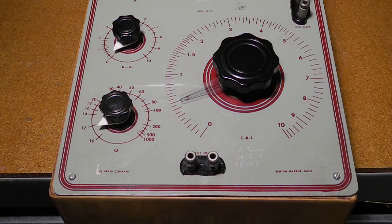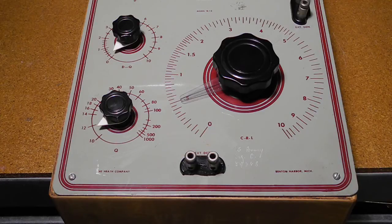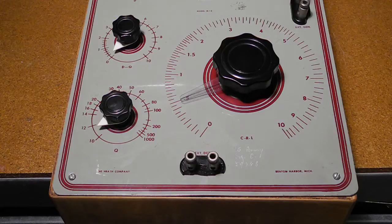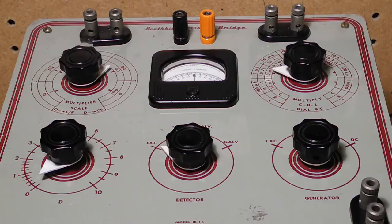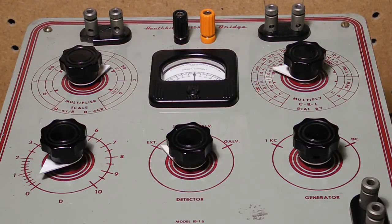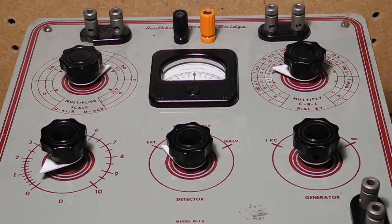It uses a meter for indicating bridge balance when measuring resistance, and external headphones, which were not included, when measuring inductance or capacitance. For DC measurements, it uses an internal 6-volt battery. For AC measurements, it uses an internal 1 kHz oscillator using a device called a Hummer. It can also make measurements using an external signal generator.